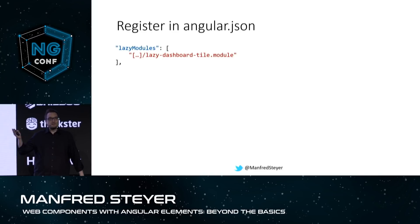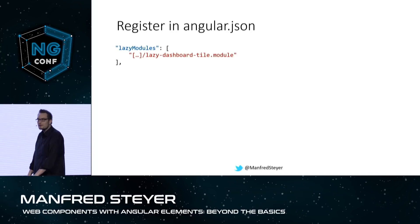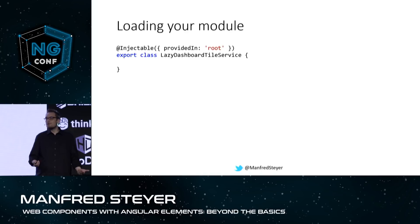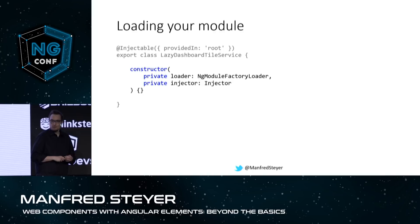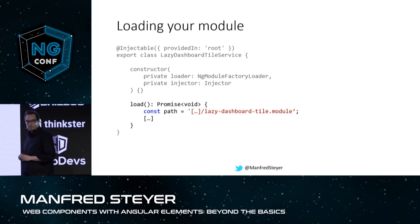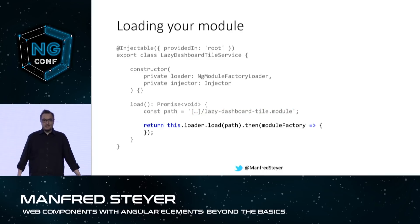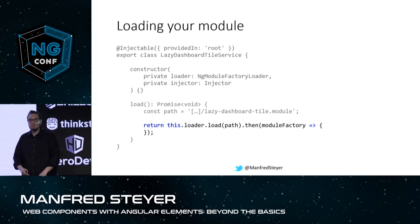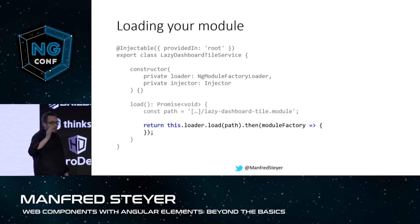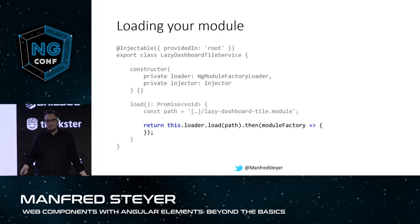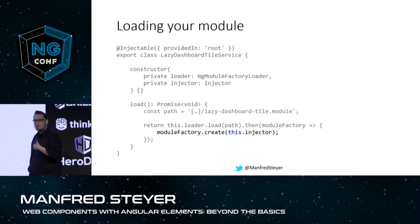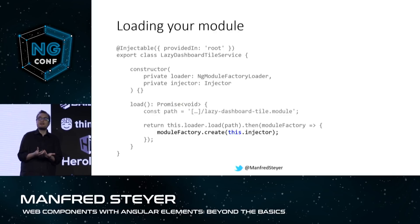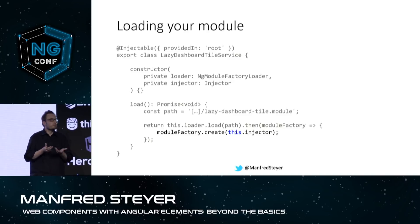Let's have a look at the code. This is what it looks like when you register the module in question in your Angular JSON — there is just the property lazyModules, and here you put the path of your module. Then you need some code for loading it. For this I'm using a service. This service gets the NgModuleFactoryLoader injected. It gets a method with a constant path also pointing to my module. Then I'm calling load — and I'm passing the path and getting back a module factory. This module factory has a create method, and when I call it, my module is instantiated. As this module is providing custom elements, I can use them immediately just by leveraging the document object we've seen before.